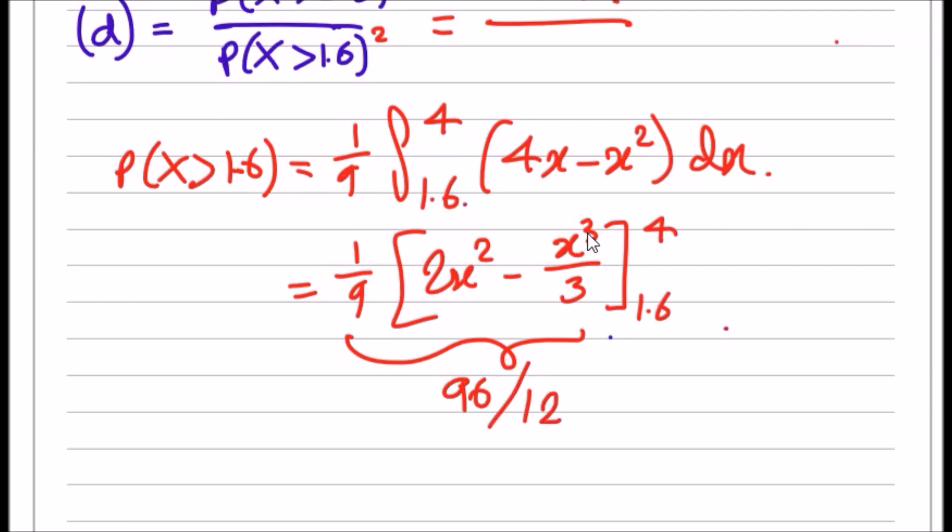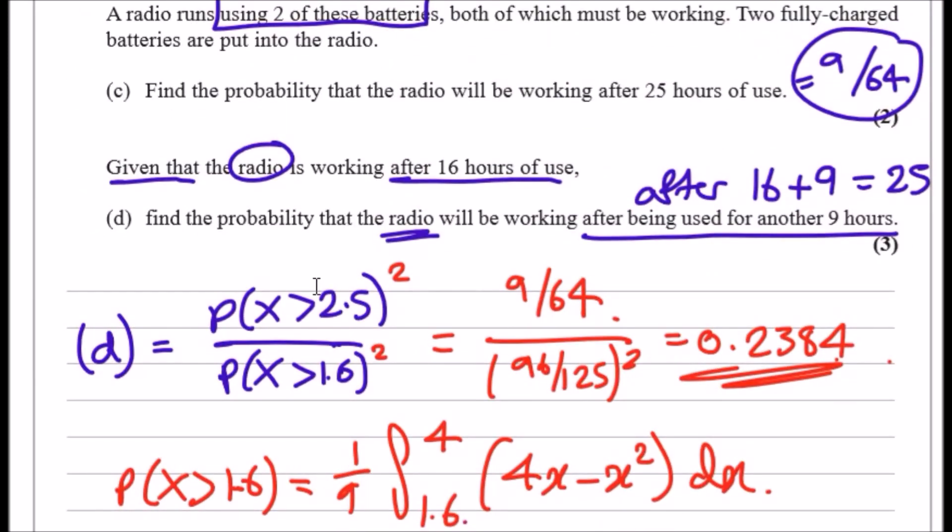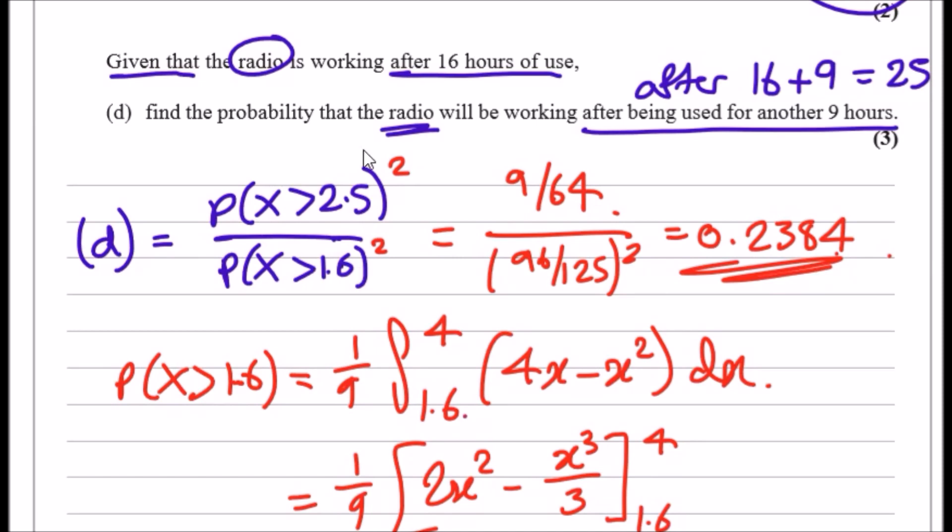To get the squared version, let's square this result. 96/125 squared—oh god, that's one ugly probability. I'm just going to write it as is: (96/125)². Then plug everything in: 9/64 over the answer. You should get about 0.2384 to four decimal places. That's it, case closed. This is a risky question because they're talking specifically about radios. Always be careful what you're trying to find—they both need two batteries, hence the squared.